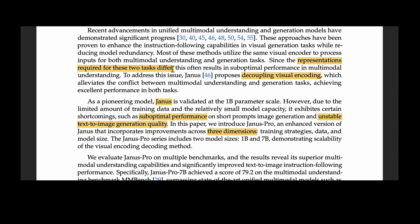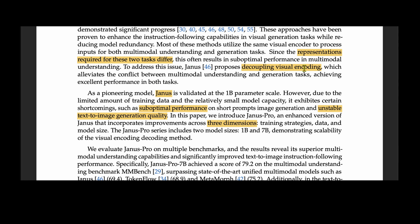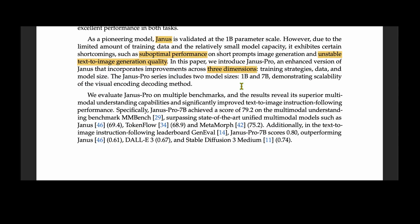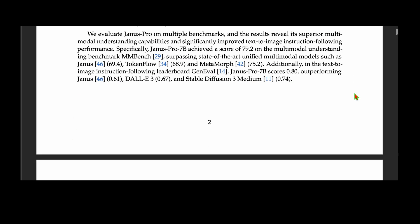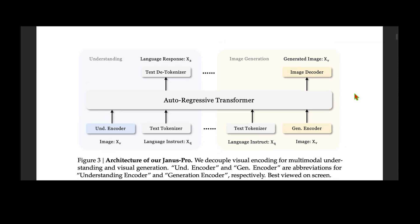The representation for understanding is different from the representation needed for generation, and this often results in suboptimal performance in multimodal understanding. What Janus proposes is to decouple visual understanding, which alleviates the conflict between multimodal understanding and generation tasks. This is the main contribution of the paper. Other state-of-the-art unified multimodal models include TokenFlow and MetaMorph, and Janus comes in the same family.